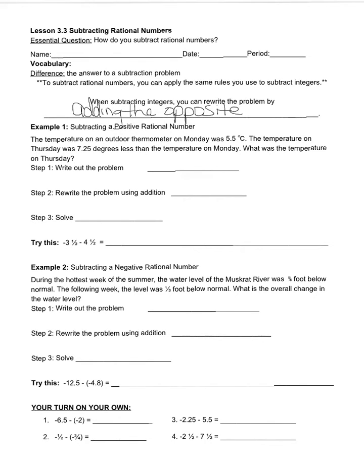Step one is to write out the problem. On Monday, it was 5.5 degrees. And then on Thursday, it was 7.25 degrees less than. That right there, that's that vocabulary that tells me I'm going to be subtracting. So I'm going to subtract 7.25.